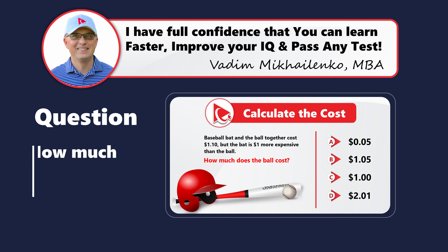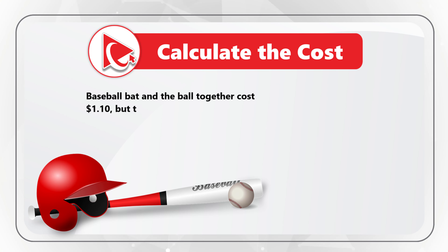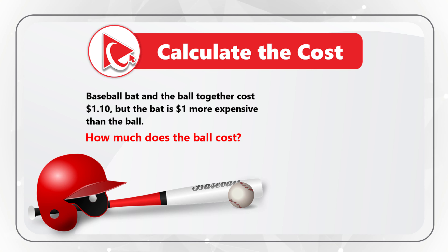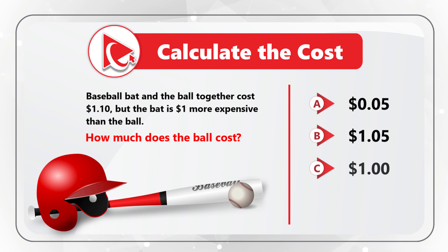This is one of my favorite questions because it tests a variety of different skills. A baseball bat and the ball together cost $1.10. But the bat is $1 more expensive than the ball. How much does the ball cost? You need to select one out of four possible choices: Choice A, $0.05; Choice B, $1.05; Choice C, $1.00; and Choice D, $2.01. Take a close look to see if you can come up with the answer.